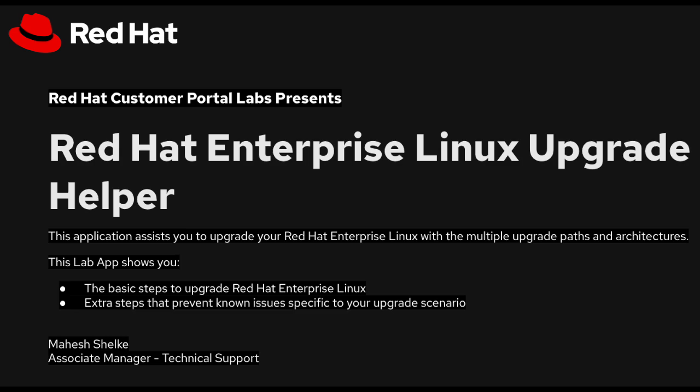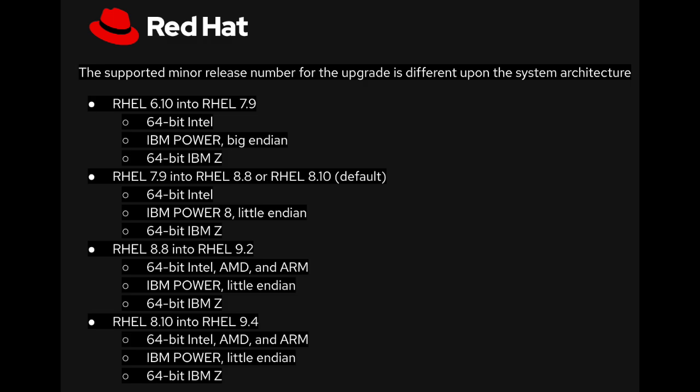Hello everyone. In this session we will be introducing you to the Red Hat Enterprise Linux Upgrade Helper Lab App. This application assists you to upgrade your Red Hat Enterprise Linux with multiple upgrade paths and architectures. This lab app shows you the basic steps to upgrade Red Hat Enterprise Linux, and extra steps that prevent known issues specific to your upgrade scenario. The supported minor release number for the upgrade is different depending on the system architecture as shown on your screen. The next few steps will explain the process of accessing this lab app and enable you to get an understanding of how it works.